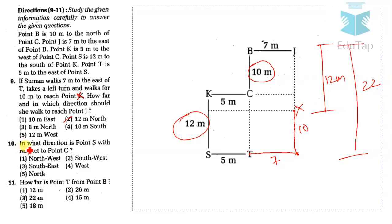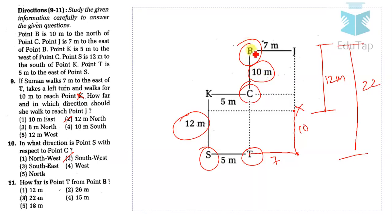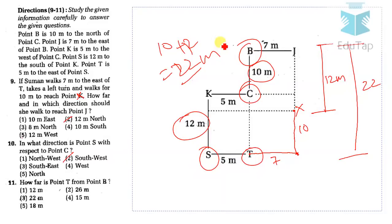Question 10: Point S is to the south-west of point C, so the answer is option 2. Question 11: The distance from point T to point B involves 10 + 12 = 22 meters total, and the answer for question 11 is option 1: 12 meters.